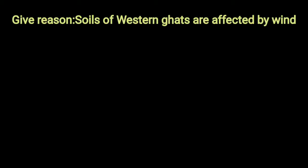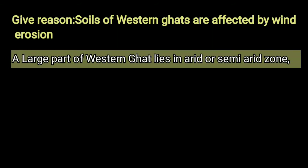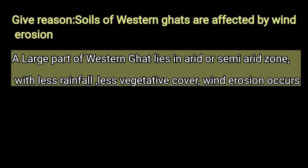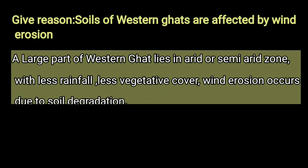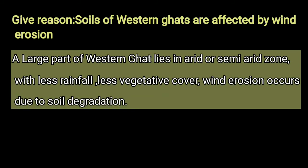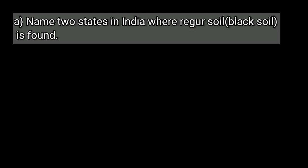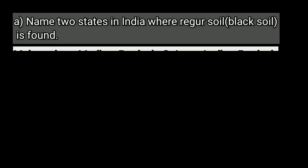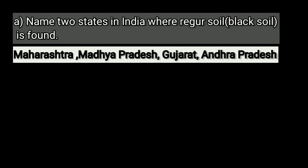Give reason: Soils of the Western Ghats are affected by wind erosion. A large part of the Western Ghats lies in an arid or semi-arid zone. With less rainfall and less vegetative cover, wind erosion occurs due to soil degradation. Name two states where regur or black soil is found: Maharashtra, Madhya Pradesh, Gujarat, and Andhra Pradesh are the states where regur soil is found.